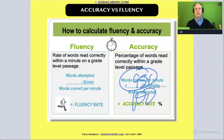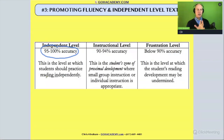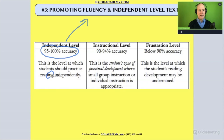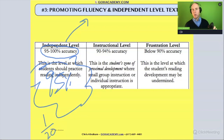So 95% accuracy doesn't mean they got 95% of words correct on the first try — it means that after self-correcting, they were able to get up to 95%. A student at that accuracy level is reading at an independent level for fluency practice. This would be a good text to build fluency, suitable for silent reading activities or reading aloud. They'd only be missing about one word in every 20.